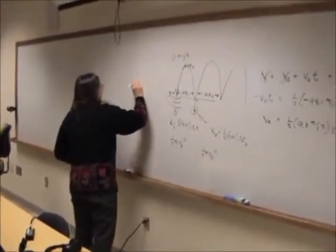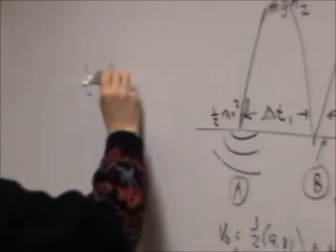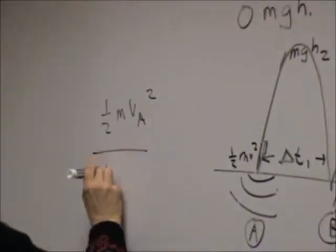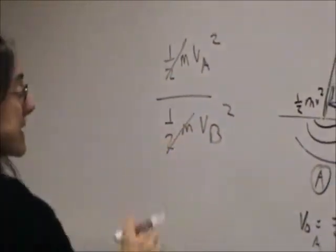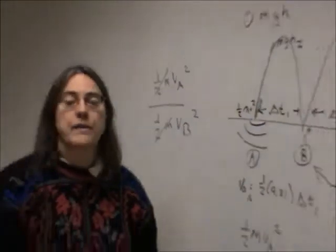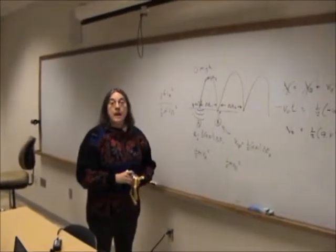If that's the case, that one-half MVA squared over one-half MVB squared, if that's a constant, these cancel out, and we get that the ratio of the velocity squared is a constant.